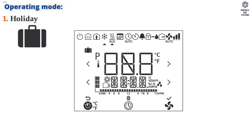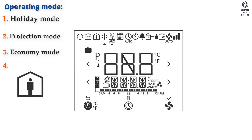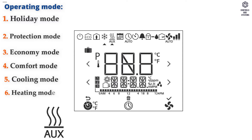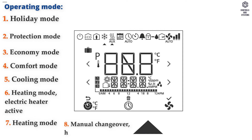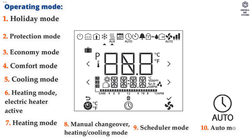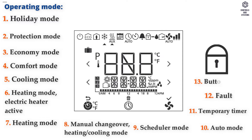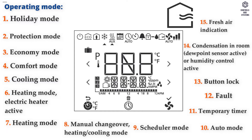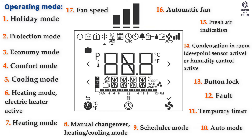Operating Mode icons: 1 — Holiday Mode; 2 — Protection Mode; 3 — Economy Mode; 4 — Comfort Mode; 5 — Cooling Mode; 6 — Heating Mode; 7 — Electric Heater Active, Heating Mode; 8 — Manual Changeover, Heating or Cooling Mode; 9 — Scheduler Mode; 10 — Auto Mode; 11 — Temporary Timer; 12 — Fault; 13 — Button Lock; 14 — Condensation in Room; 15 — Fresh Air Indication; 16 — Automatic Fan; 17 — Fan Speed 1, 2, and 3.